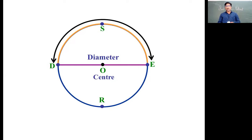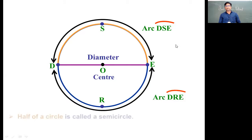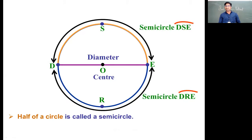First one is DSE, half circle we can say. And other one is DRE, the other half circle. It's called semicircle. Half of a circle is called semicircle, and semicircle is also an arc of the circle.